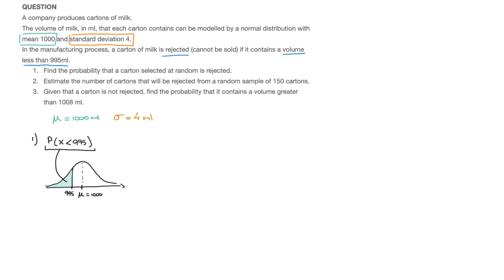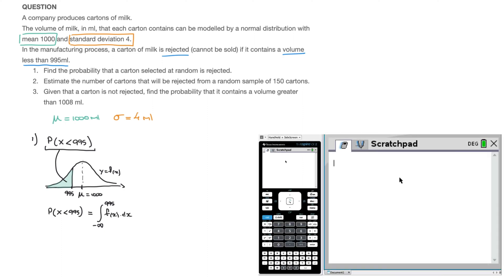To find this probability, we'll use our calculator, but there's still something to write on the exam paper. Since the bell curve has equation Y = F(X), where F(X) is the normal probability density function, the probability that X < 995 equals the integral from negative infinity up to 995 of F(X). We use the normal CDF function — normal cumulative density function — on the calculator.